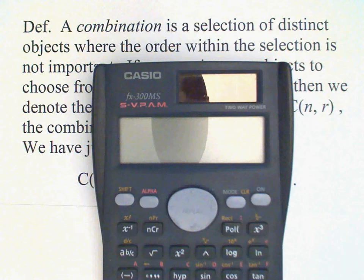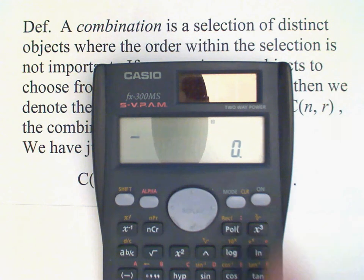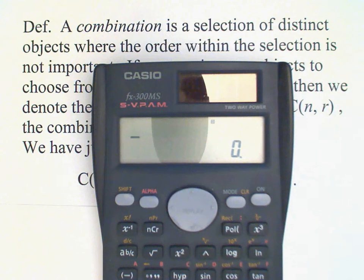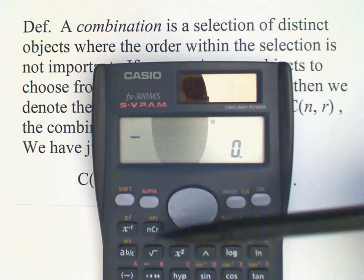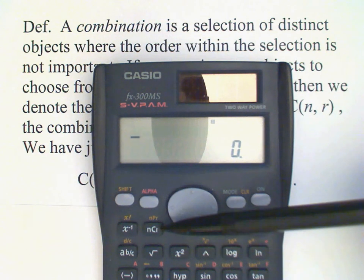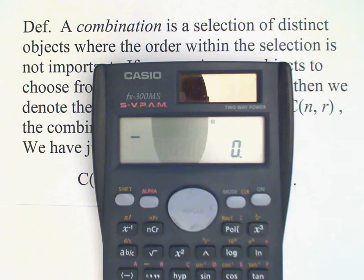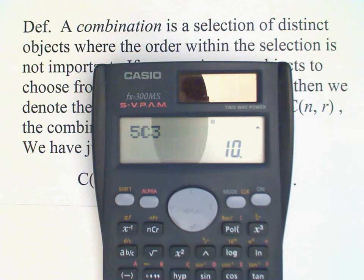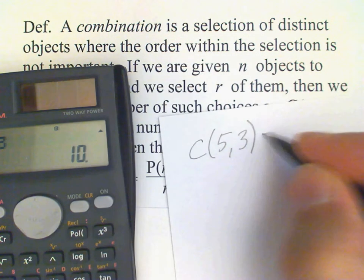So let's do that on the calculator now. We're going to use this button here, nCr. I'm going to enter my five first, and then nCr on this calculator, and then three, and then press equals. And the answer is ten. That means C(5, 3) is equal to ten.